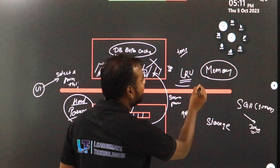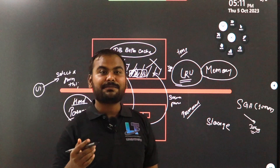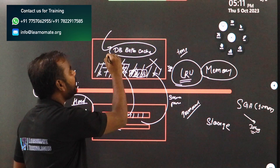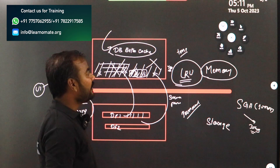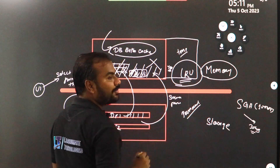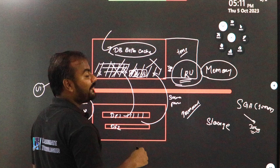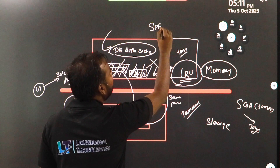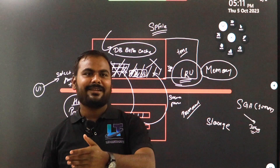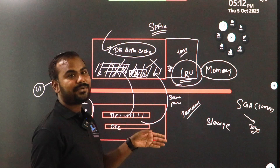The most important thing we discussed today is LRU — Least Recently Used. If you want to change the size of the database buffer cache, if it is getting full again and again, you can monitor the database buffer cache. You can also extend its size. These changes are done in the SPFILE. There is a parameter related to the database buffer cache, and you can change it using the command: ALTER SYSTEM SET parameter_name = new_value SCOPE = whatever you want.